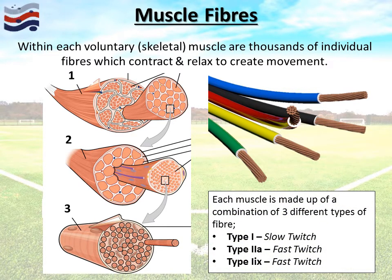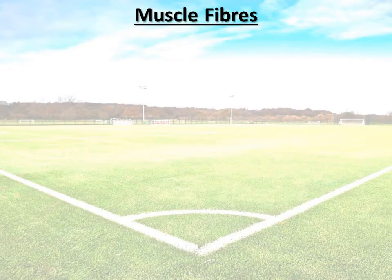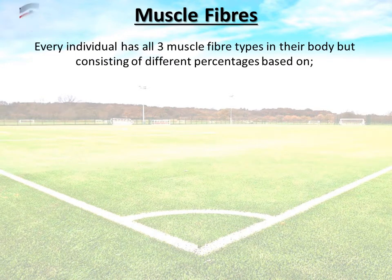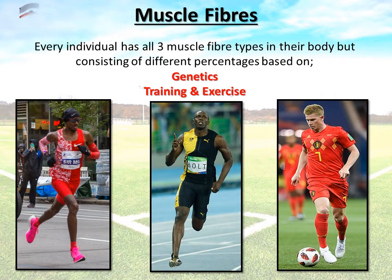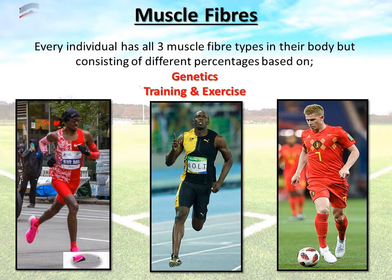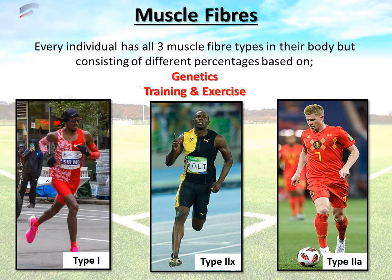Muscle fibres can be categorised into three types: type one, known as slow twitch; type two A, which is fast twitch; and type two X, also fast twitch. Every individual has all three muscle fibre types, but the percentage you have is based on genetics — what you were born with — and also the type of training you take part in. For example, Mo Farah's muscle fibres would predominantly be type one; Usain Bolt's would predominantly be type two X; and Kevin De Bruyne's would predominantly be type two A.